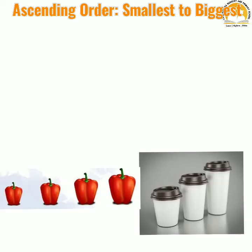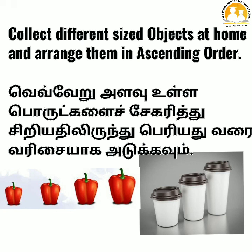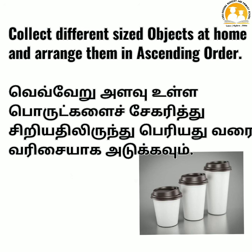Got it, children? Your activity for today is to collect some objects like vegetables, fruits, or any other items or toys available in your home and arrange them in ascending order, that is from smallest to biggest. Take a picture and send it to me. Call me for any doubts. Thank you.